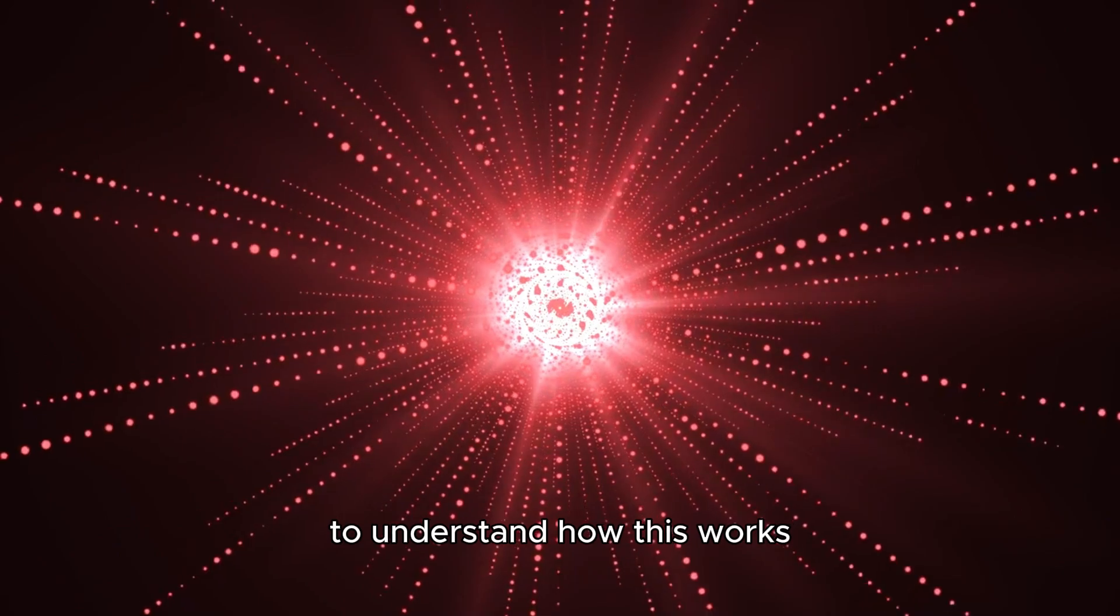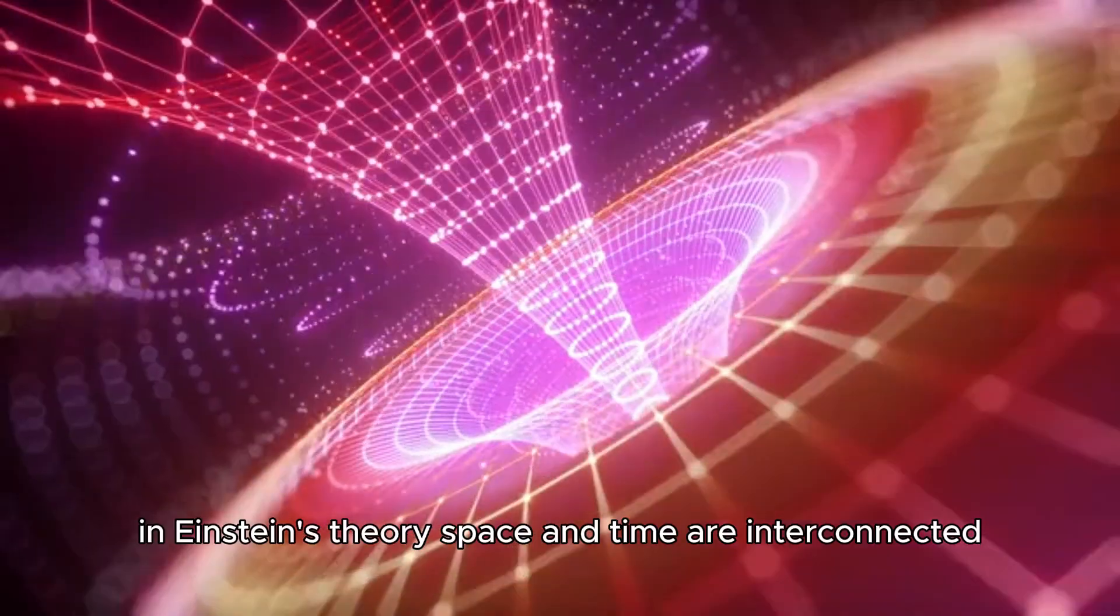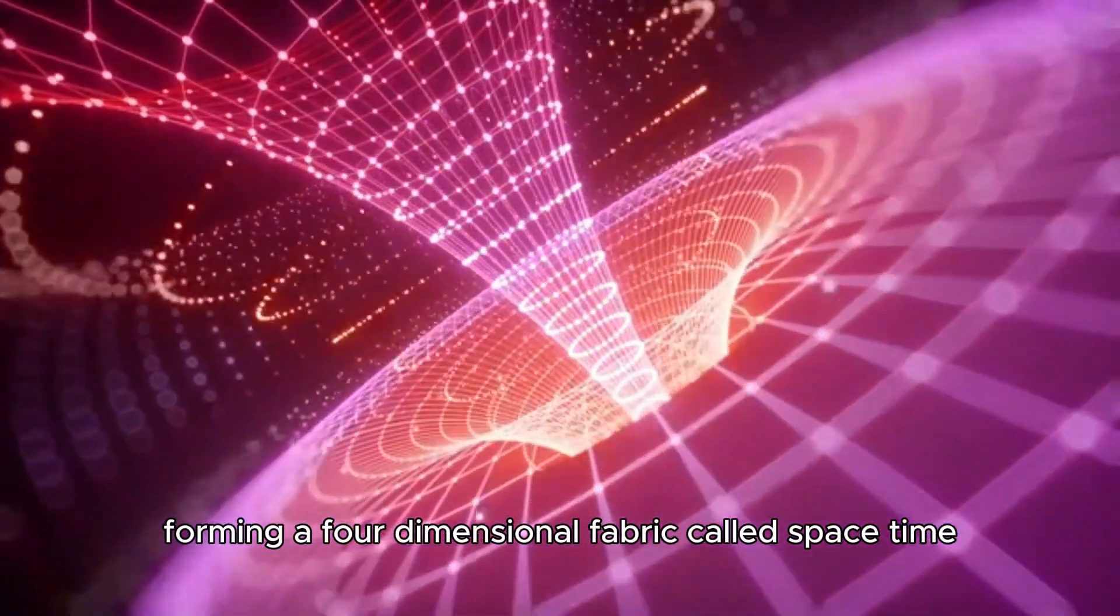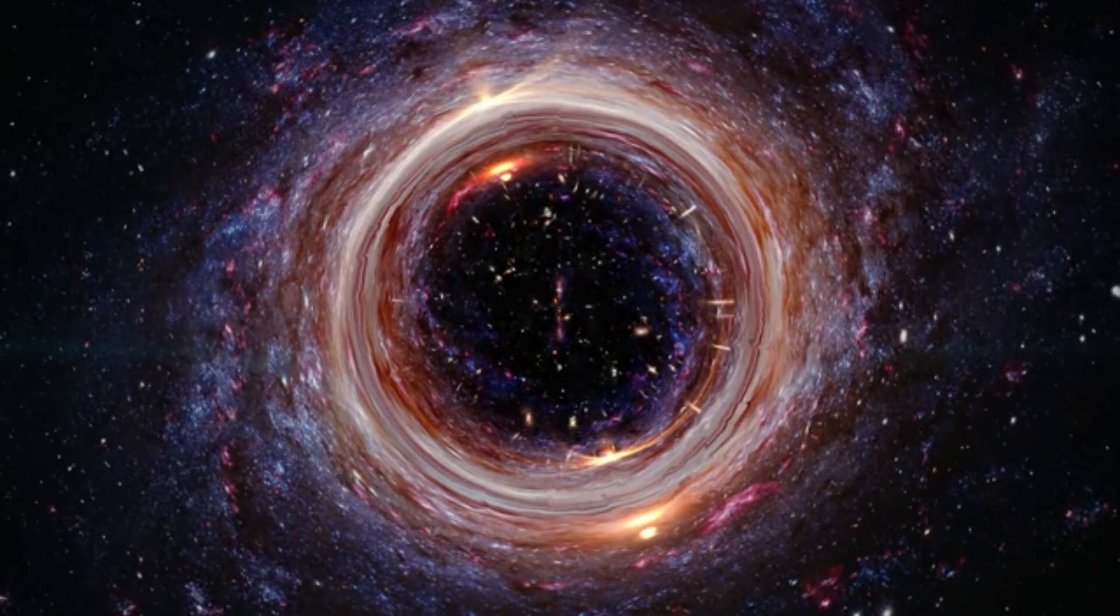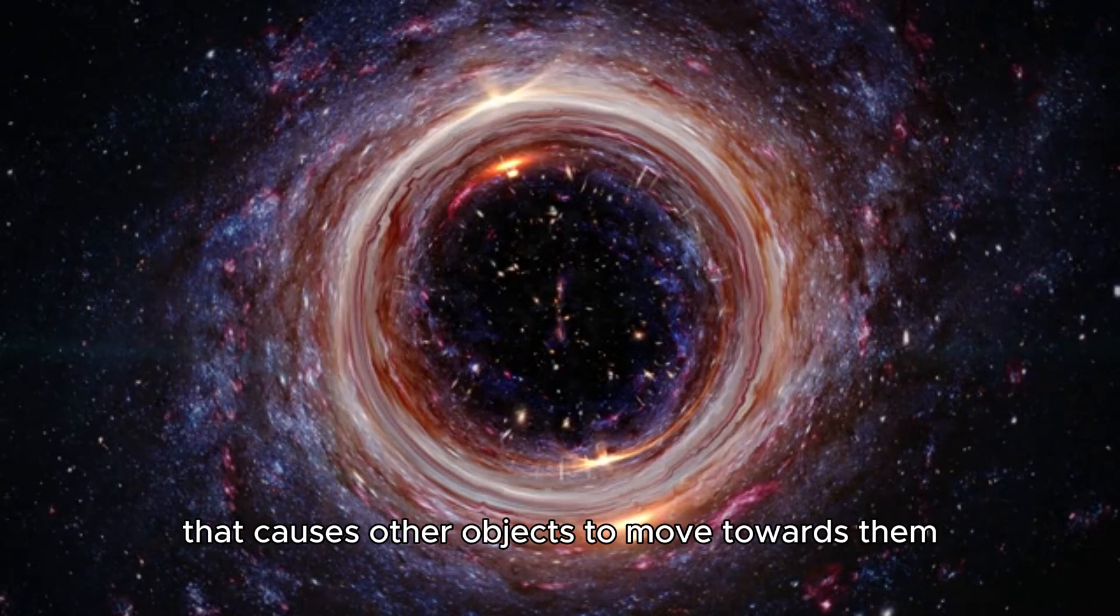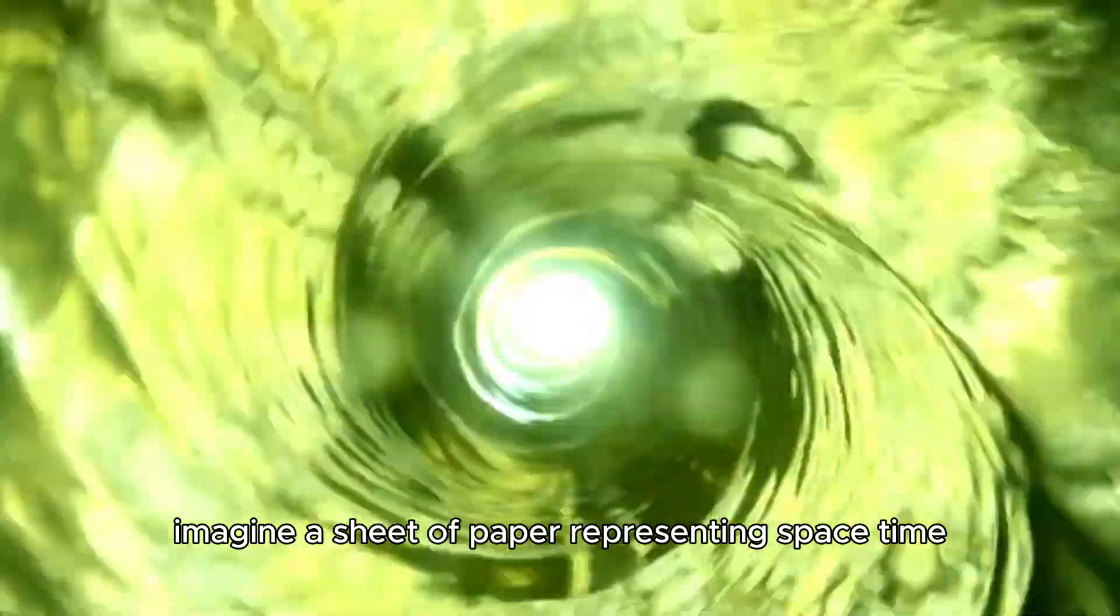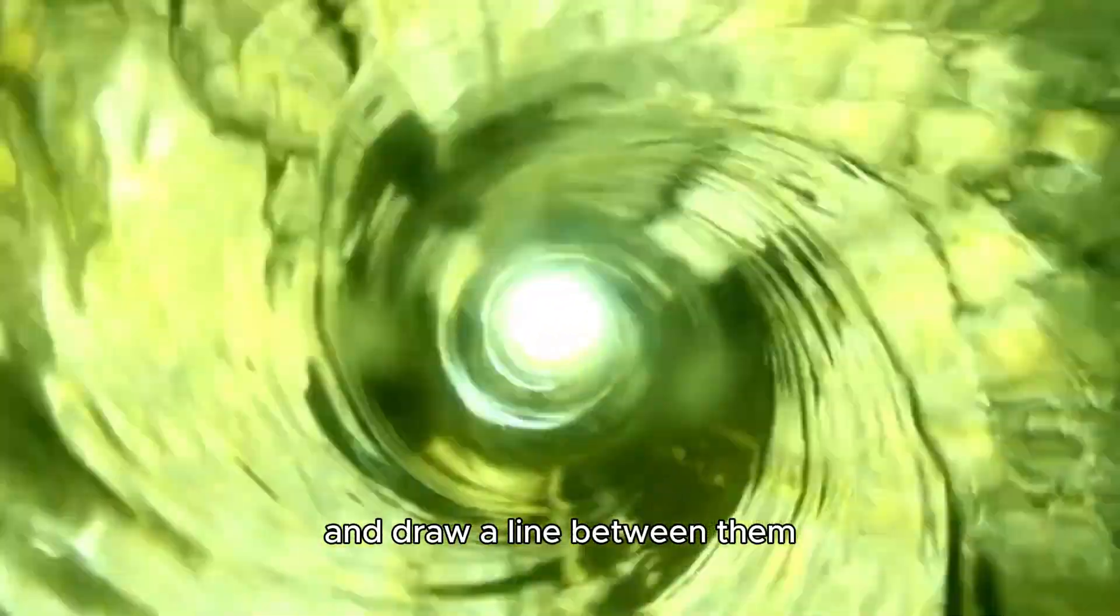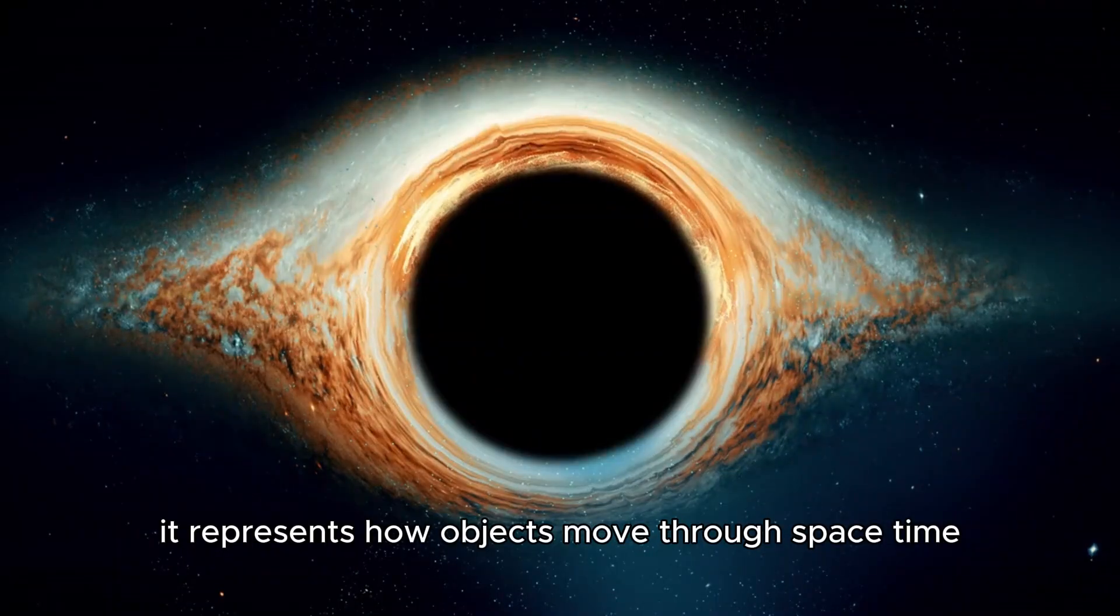To understand how this works, consider the concept of space-time in Einstein's theory. Space and time are interconnected, forming a four-dimensional fabric called space-time. Objects with mass warp this fabric, creating a gravitational field that causes other objects to move towards them. Imagine a sheet of paper representing space-time. If you place two points on the paper and draw a line between them, it represents how objects move through space-time.